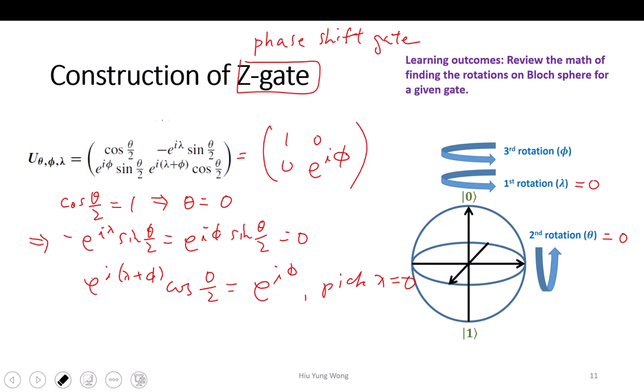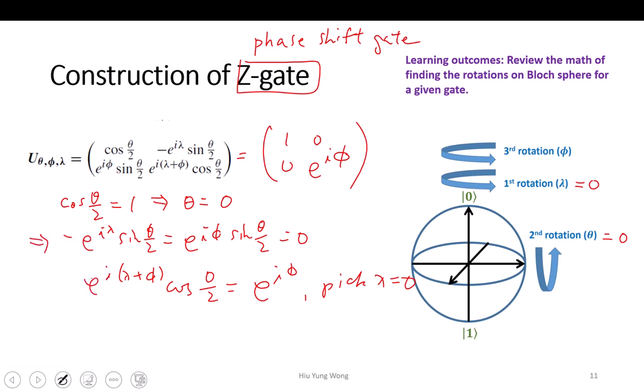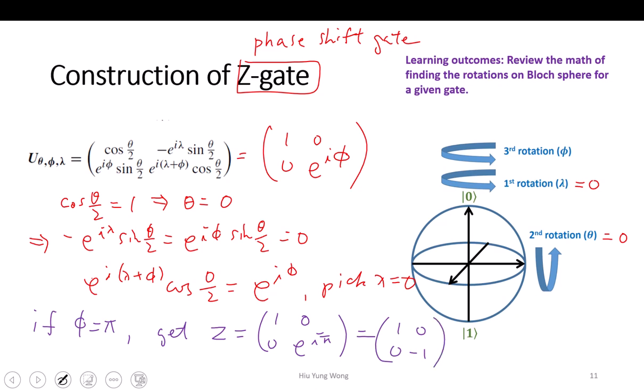So what do we get? If phi equals pi, then you get the Z-gate, which is [1, 0; 0, e^(i*pi)] equal to [1, 0; 0, -1]. So basically it's just to reveal to you that if you can rotate about the Z-axis by phi, then you will construct the phase shift gate, and when phi equals pi then it is a Z-gate.